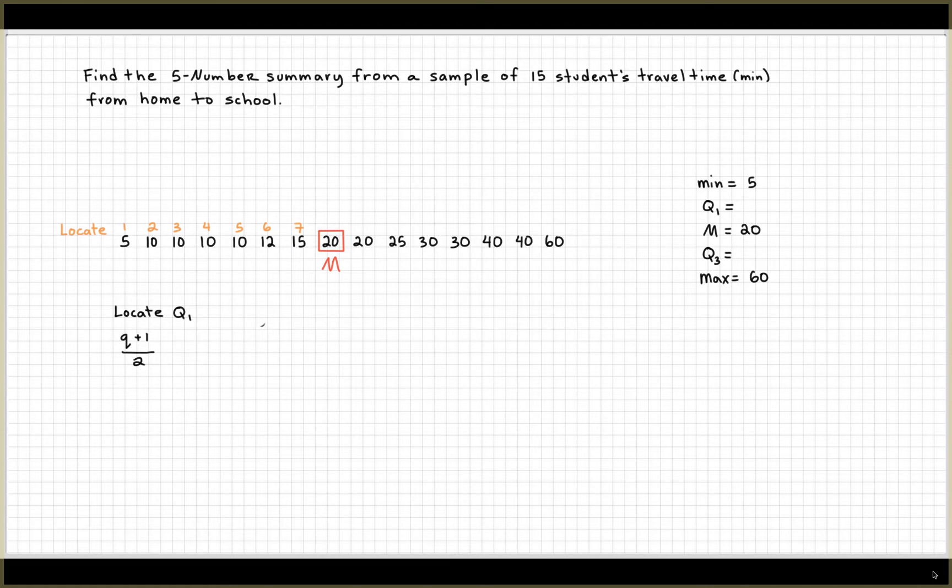To figure out the location of Q1, this time our formula changes just a bit. The variable instead of n means how many data points you have in your data set. Well, for finding Q1 in this case, we're only going to find a subset of it. We're only going to look at seven data points.